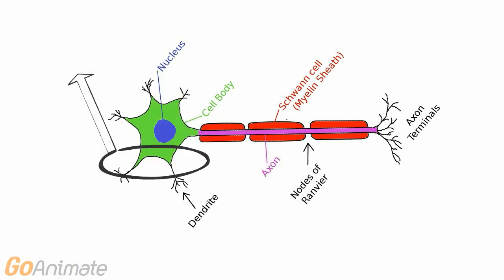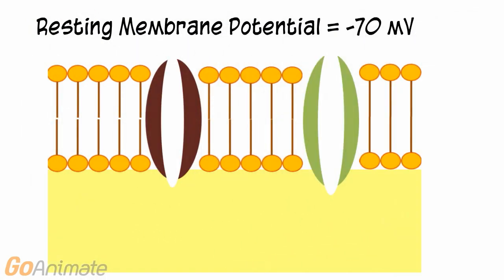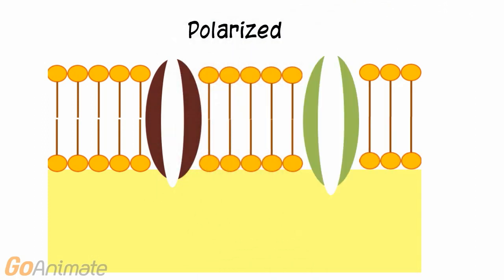Let's take a closer look at the neuron cell membrane. The neuron's membrane contains protein channels and exists at a resting membrane potential of about negative 70 millivolts. We say that the neuron is polarized.